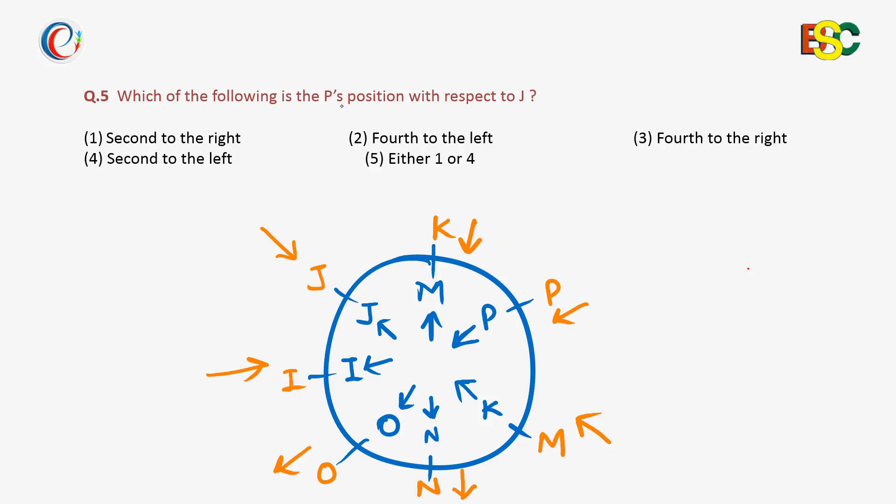The last question on this puzzle says, P's position with respect to J. Now, the case which is drawn outside the circle, here P is second to the left of J.